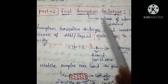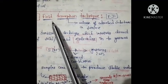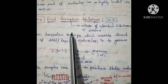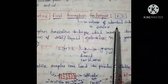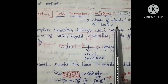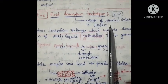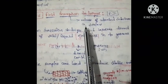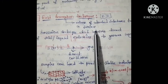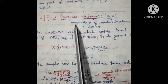Before entering into this technique, we should know the meaning of desorption. Desorption means release of adsorbed substance from a surface. You should have an idea about adsorption and absorption. Absorption is a bulk phenomenon, whereas adsorption is a surface phenomenon. So when an adsorbed substance gets released from a surface, it is said to be desorption.